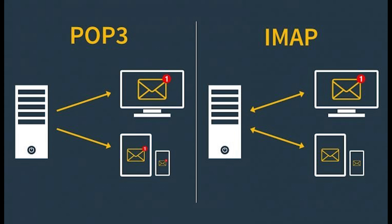POP allows you to save email on your computer, making it ideal when users need to access email offline. IMAP allows you to access your email wherever you are, from any device, because it's internet-based. When you read an email message using IMAP, you aren't actually downloading or storing it on your computer — instead, you're reading it from the email service. POP works by contacting your email service and downloading all your new messages. Once they're downloaded, they're deleted from the email service, meaning the email can only be accessed from that device. If you try to access email from any other device, previously downloaded messages won't be available.